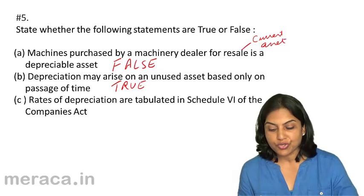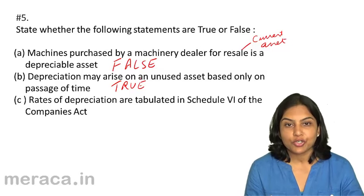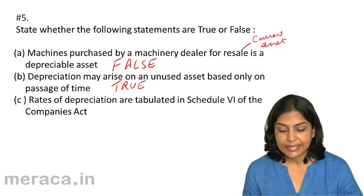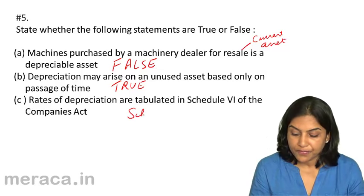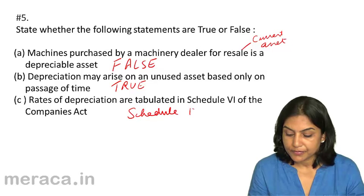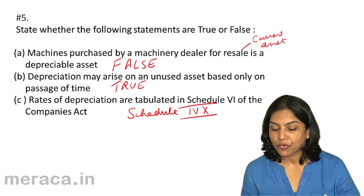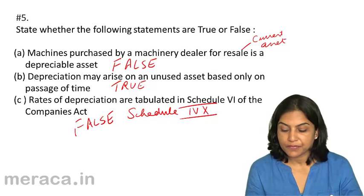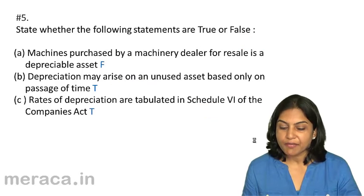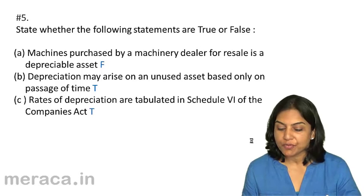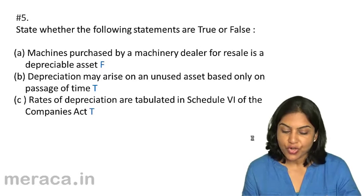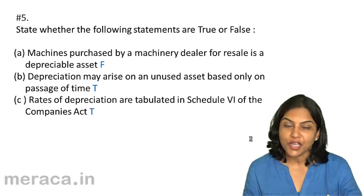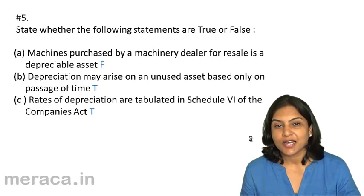Therefore, depreciation may arise on an unused asset based only on the passage of time — true. Statement C: Rates of depreciation are tabulated in Schedule 6 of the Companies Act — this is false. The rates of depreciation are tabulated in Schedule 14 of the Companies Act. Schedule 6 gives us the format of the financial statements, while Schedule 14 tells us the rates of depreciation. Summary: Statement A is false; Statement B is true; Statement C is false.